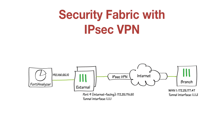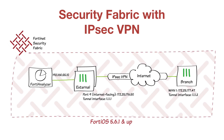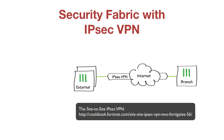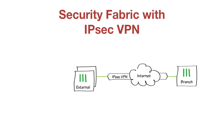You will need FortiOS 5.6.1 or higher. In this example, the root FortiGate in the security fabric is an HA cluster called External, and the remote FortiGate is called Branch. Before you begin, you will need an existing IPsec VPN site-to-site tunnel between two FortiGates.